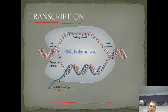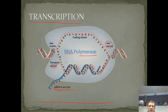What happens is the enzyme RNA polymerase unwinds the DNA — remember DNA is double-stranded — and then adds complementary bases to the newly exposed template strand according to the base pairing rules. The DNA rewinds at the other end as it moves along the gene. So what do we mean by complementary base pairing rules? Here's our template strand, and I'll make up a sequence.